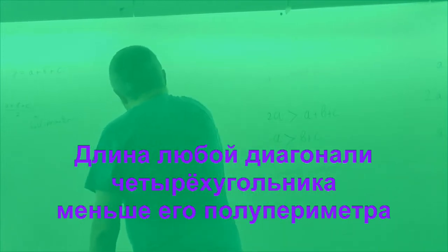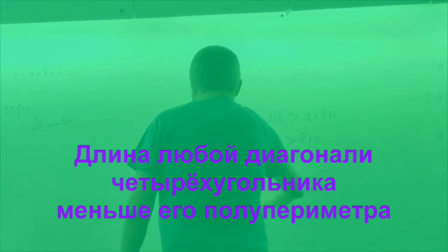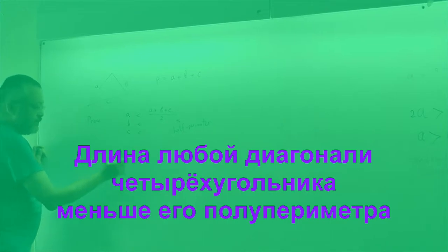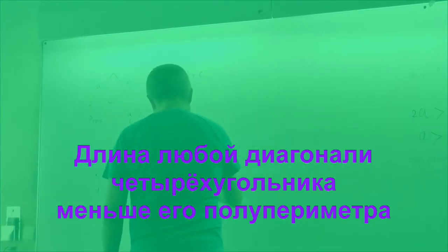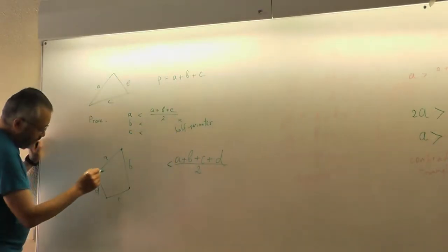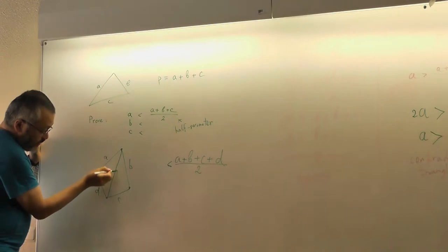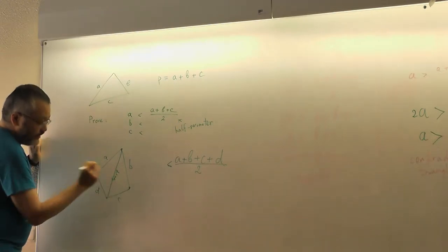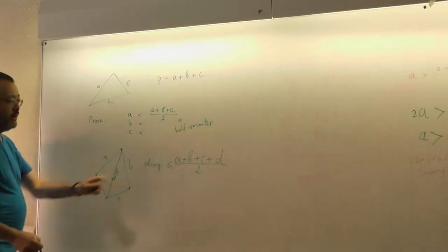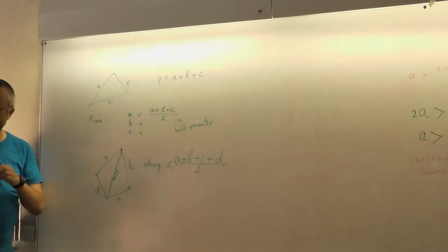Our next inequality is a bit more complicated. Imagine we have a quadrangle. Then it also has a perimeter: A plus B plus C plus D. And we divide it also by 2. Then you should prove that the diagonal is at most the half of the perimeter. We can take another diagonal.